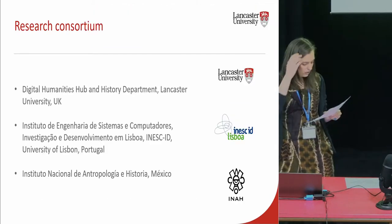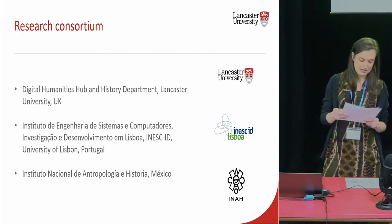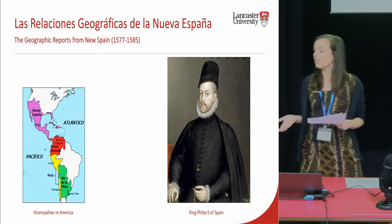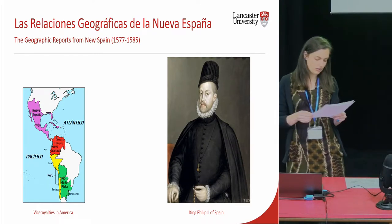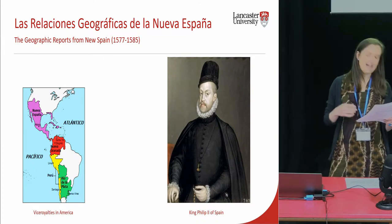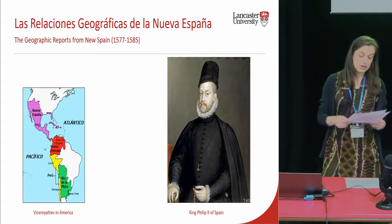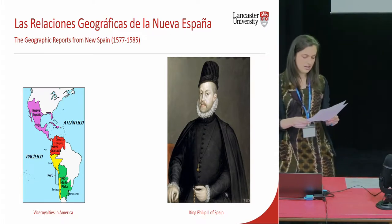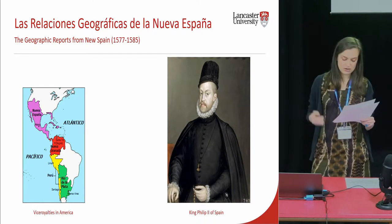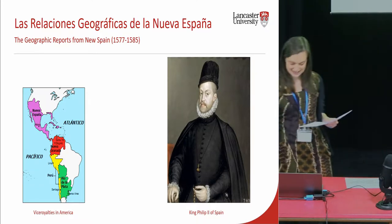This research is carried out by three teams from Lancaster University, University of Lisbon, and the Instituto Nacional de Antropología e Historia in Mexico. The project concentrates on a corpus of documents known as Las Relaciones Geográficas de la Nueva España — geographic reports from New Spain compiled between 1577 and 1585 in Mexico and Guatemala at the request of King Philip II of Spain.